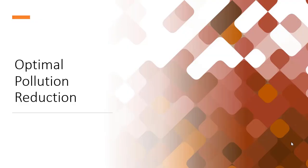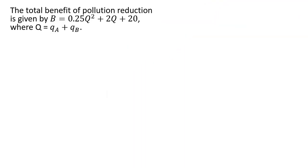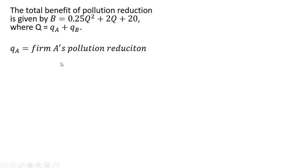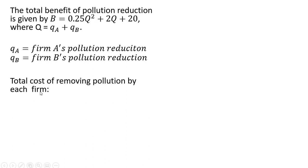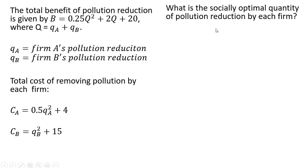Let's look at optimal pollution reduction. The total benefit of pollution reduction is given by the total benefit equation, where Q represents pollution reduction from firm A and firm B. The total cost of removing pollution by each firm is given by these total cost equations. We want to find the socially optimal quantity of pollution reduction by each firm.